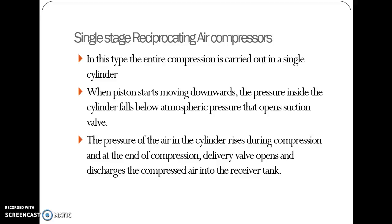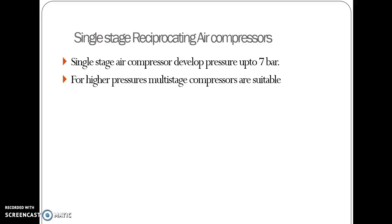There are two types of reciprocating air compressors: single stage and double stage. In the single stage reciprocating air compressor, the entire compression is carried out in a single cylinder. When the piston moves downward, pressure inside the cylinder falls below atmospheric pressure, opening the suction valve. During compression, the delivery valve opens and discharges the compressed air into the reservoir tank. A single stage reciprocating compressor develops pressure up to only 7 bars; for higher pressure, we need multi-stage compression.